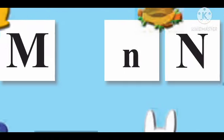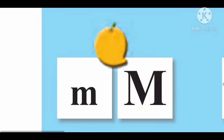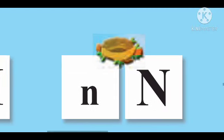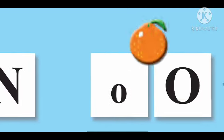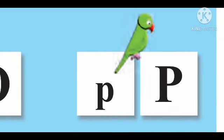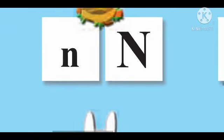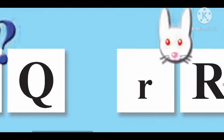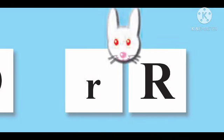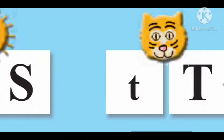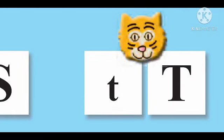Now next is M for mango. N for nest. O for orange. P for parrot. Q for cushion. R for rabbit. S for sun. T for... Who's this? Yes, tiger.